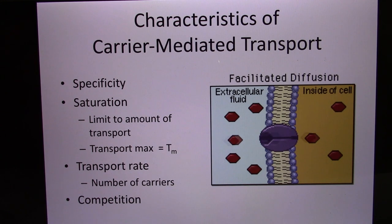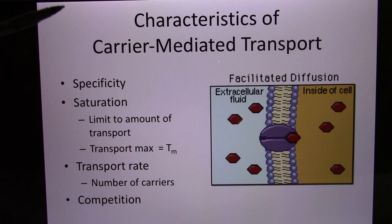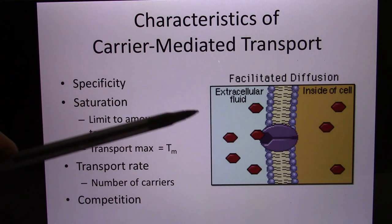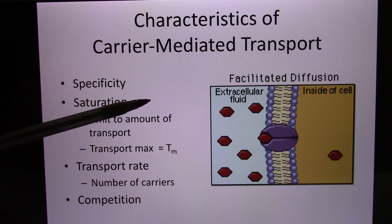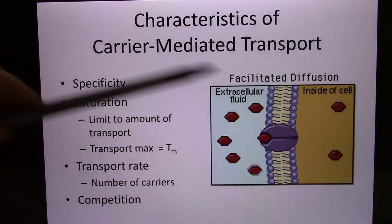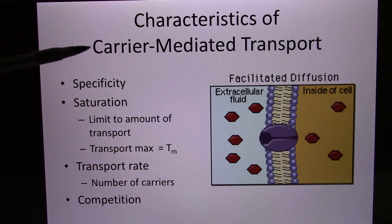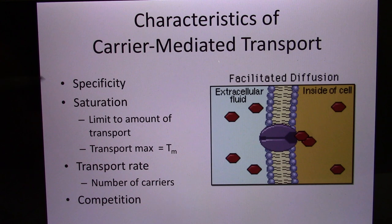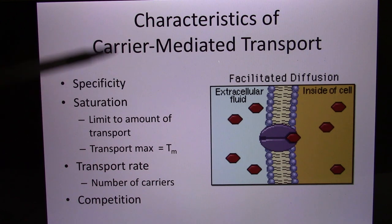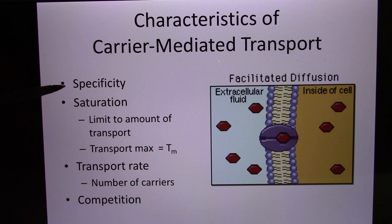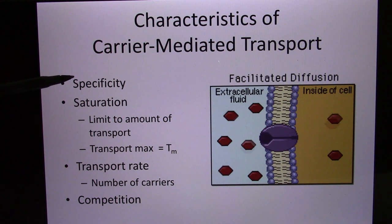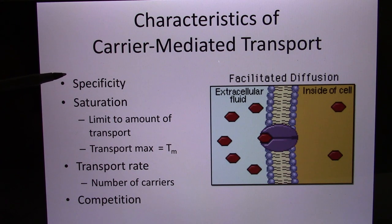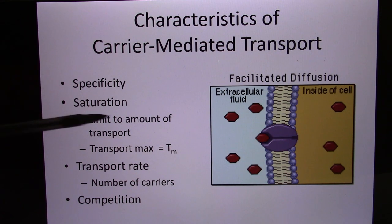For this kind of carrier-mediated transport, they use the membrane protein to help move the molecule from high to low, like the glucose carrier. They have specificity — each membrane protein, like the glucose carrier, only carries glucose. So different proteins carry different substances.